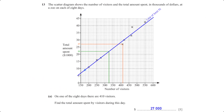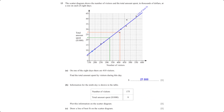The scatter diagram shows the number of visitors and the total amount spent in thousands of dollars at a zoo on each of eight days. On one of the eight days there are 410 visitors. From the grid, the total amount spent on that day was $27,000. Information for the ninth day is plotted at (175, 9). A line of best fit is drawn, ensuring it passes through as many points as possible while balancing an equal number of points above and below the line.